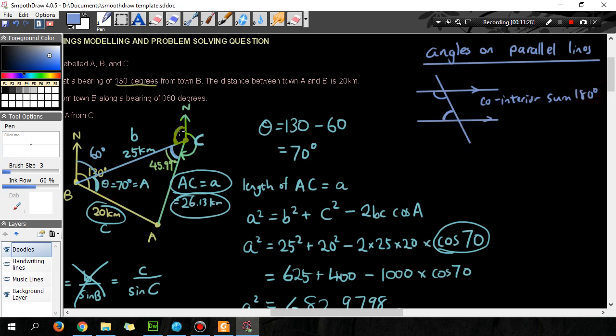So this angle and this angle must add up to 180, which means this angle here must be 180 minus 60, which is 120 degrees.